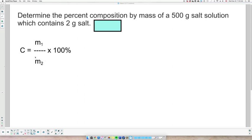The problem says, determine the percent composition by mass of a 500 gram salt solution which contains 2 grams of salt. So the smaller mass obviously should be the mass of solute, right, because it's included inside the total mass of the solution, of the mixture.